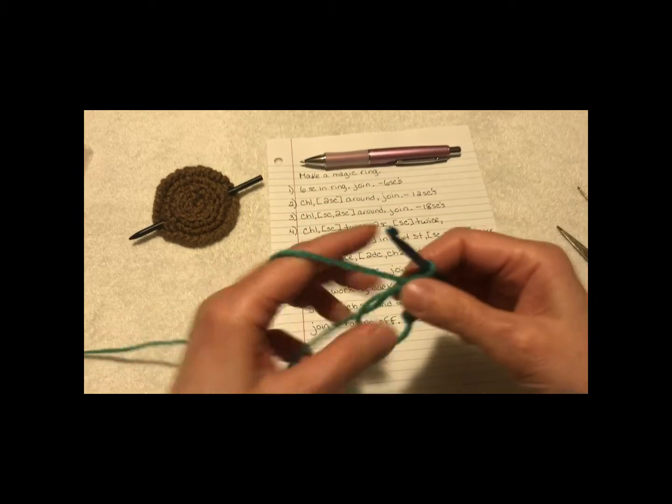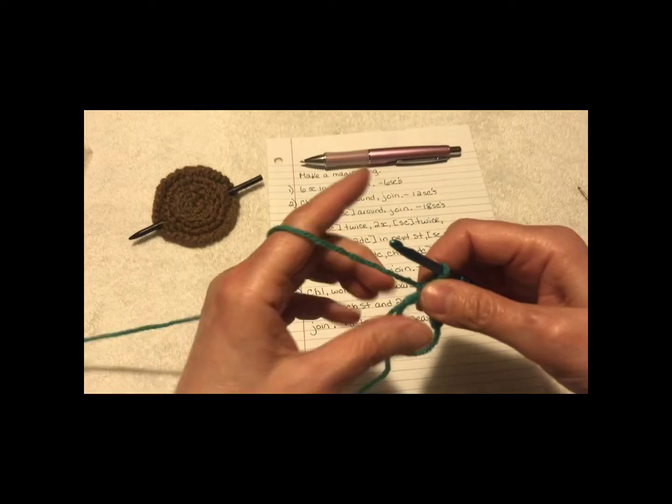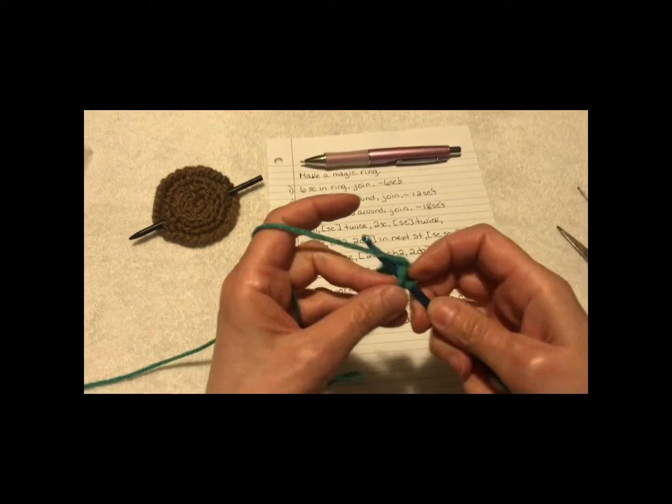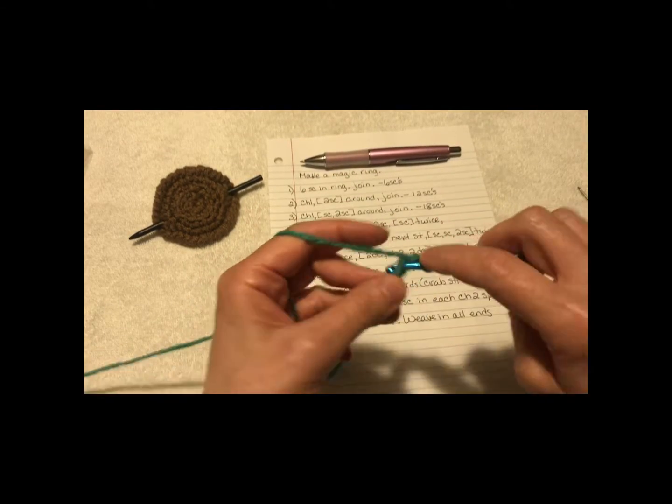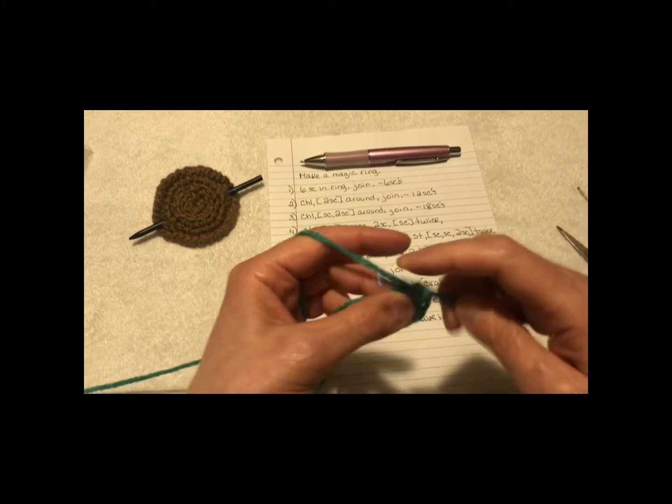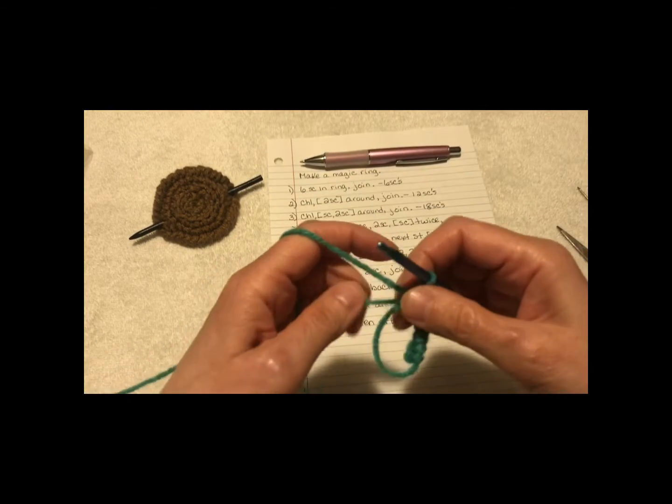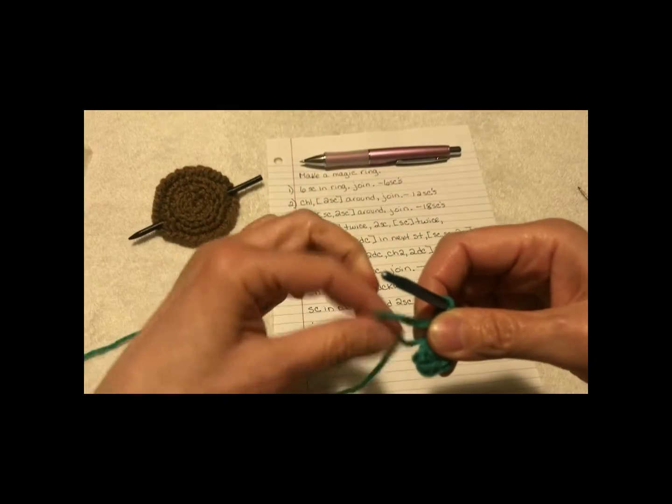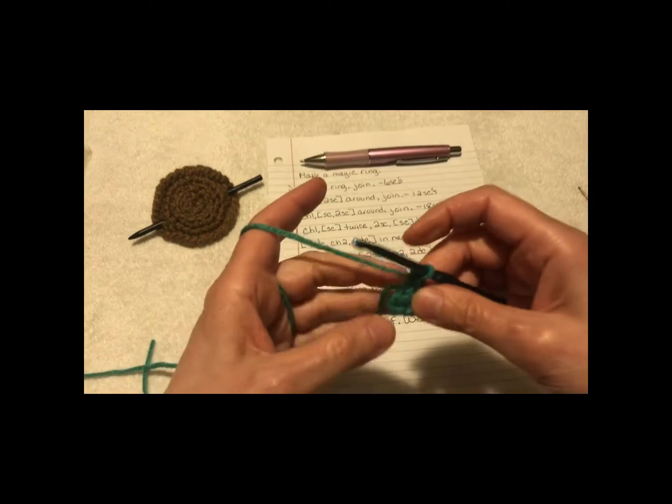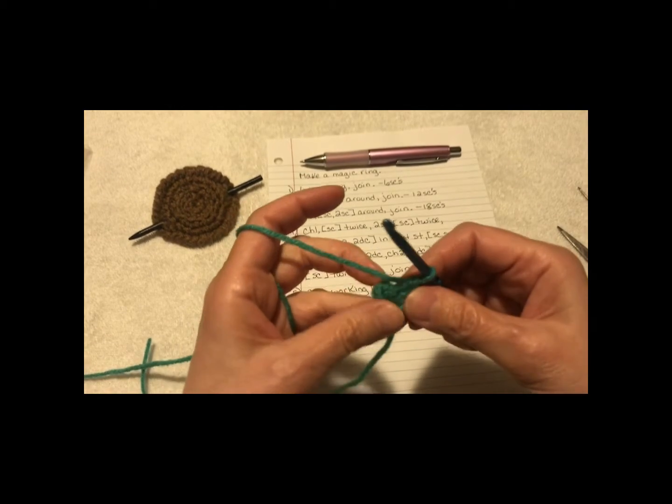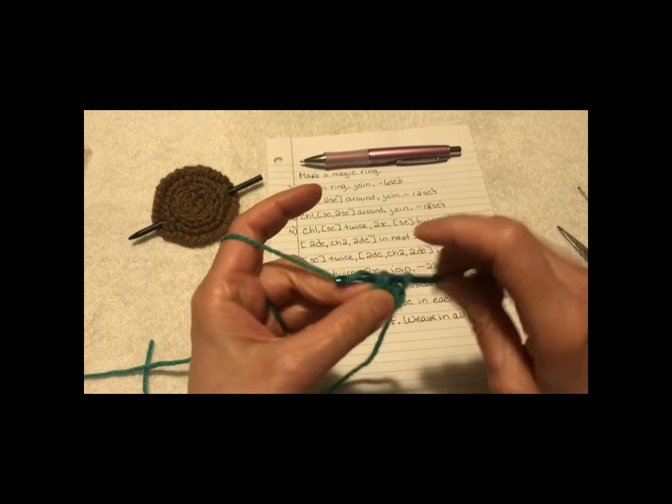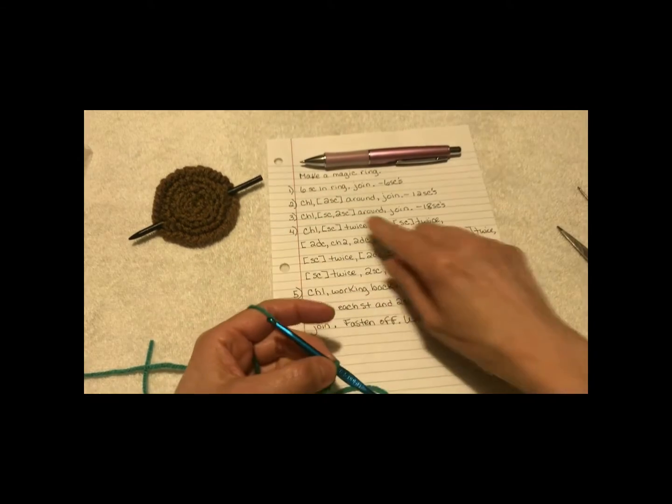And when you crochet, go over this part too, the tail. So, I got 3, 4, 5, 6. Pull. Don't clip anything, because you're going to want to weave this in later to secure. Okay, join to the first single crochet.